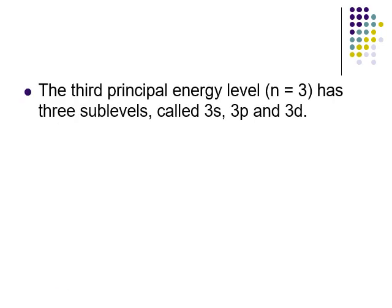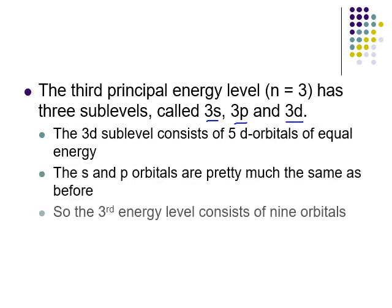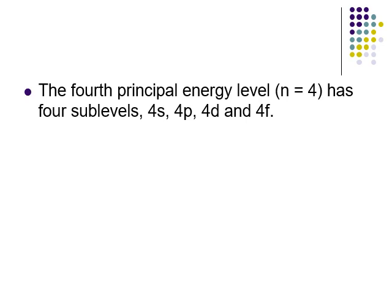The third energy level has three sublevels: 3s, 3p, and 3d. In our building: the third floor has three rooms — the 3s room has one orbital, the 3p has three, and the 3d has five. The fourth energy level has four sublevels: 4s, 4p, 4d, and 4f — with one, three, five, and seven orbitals respectively.